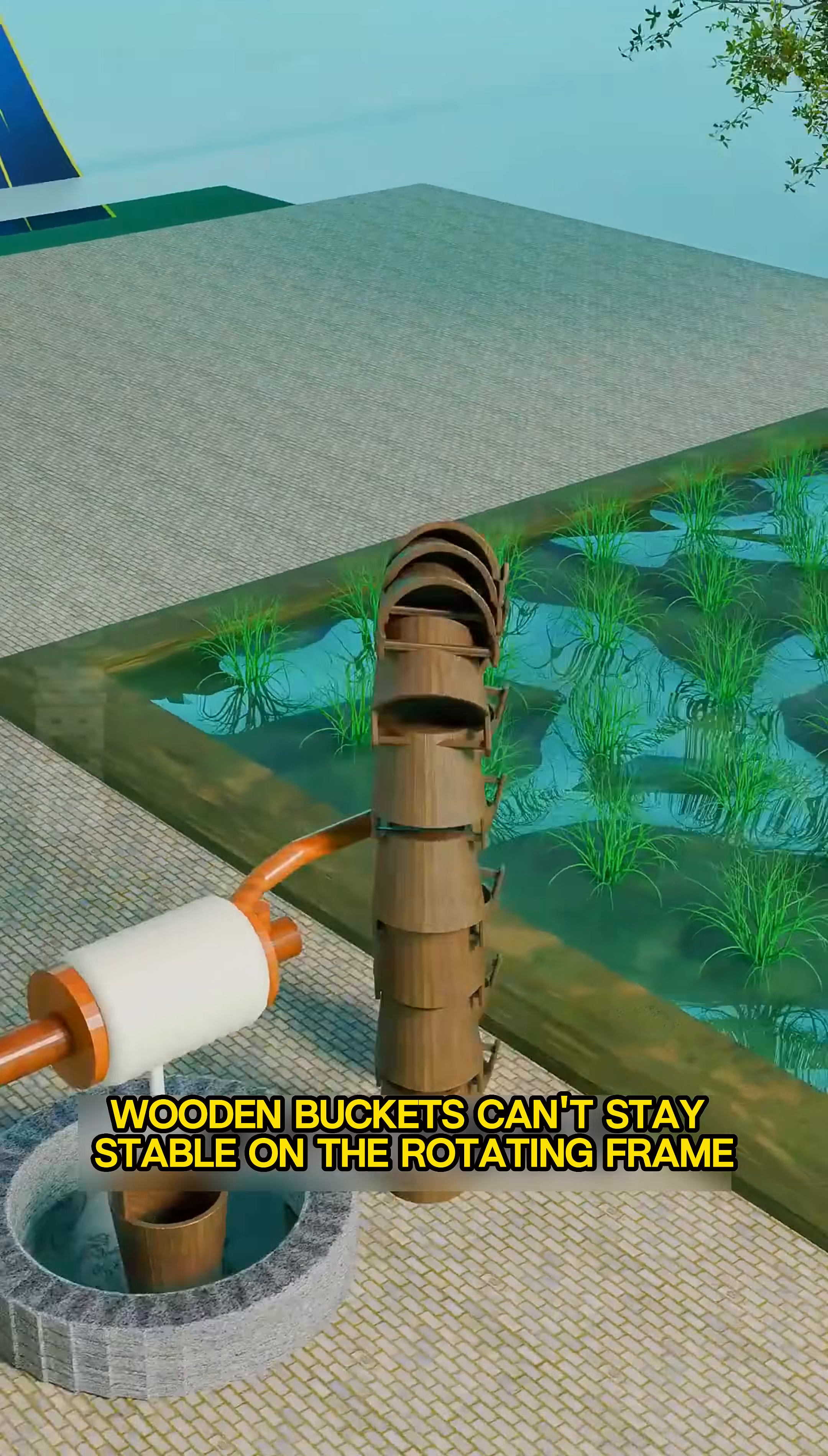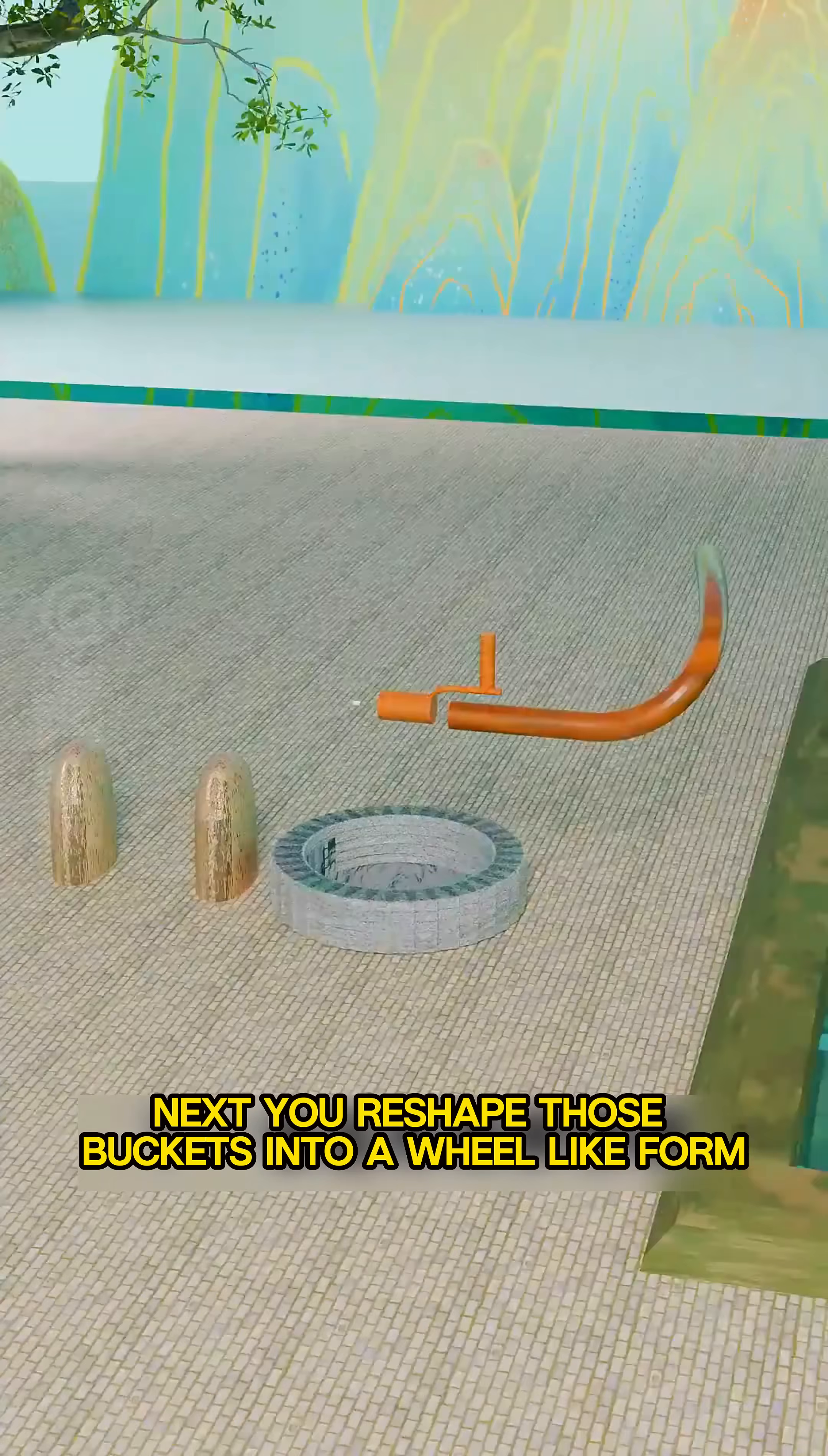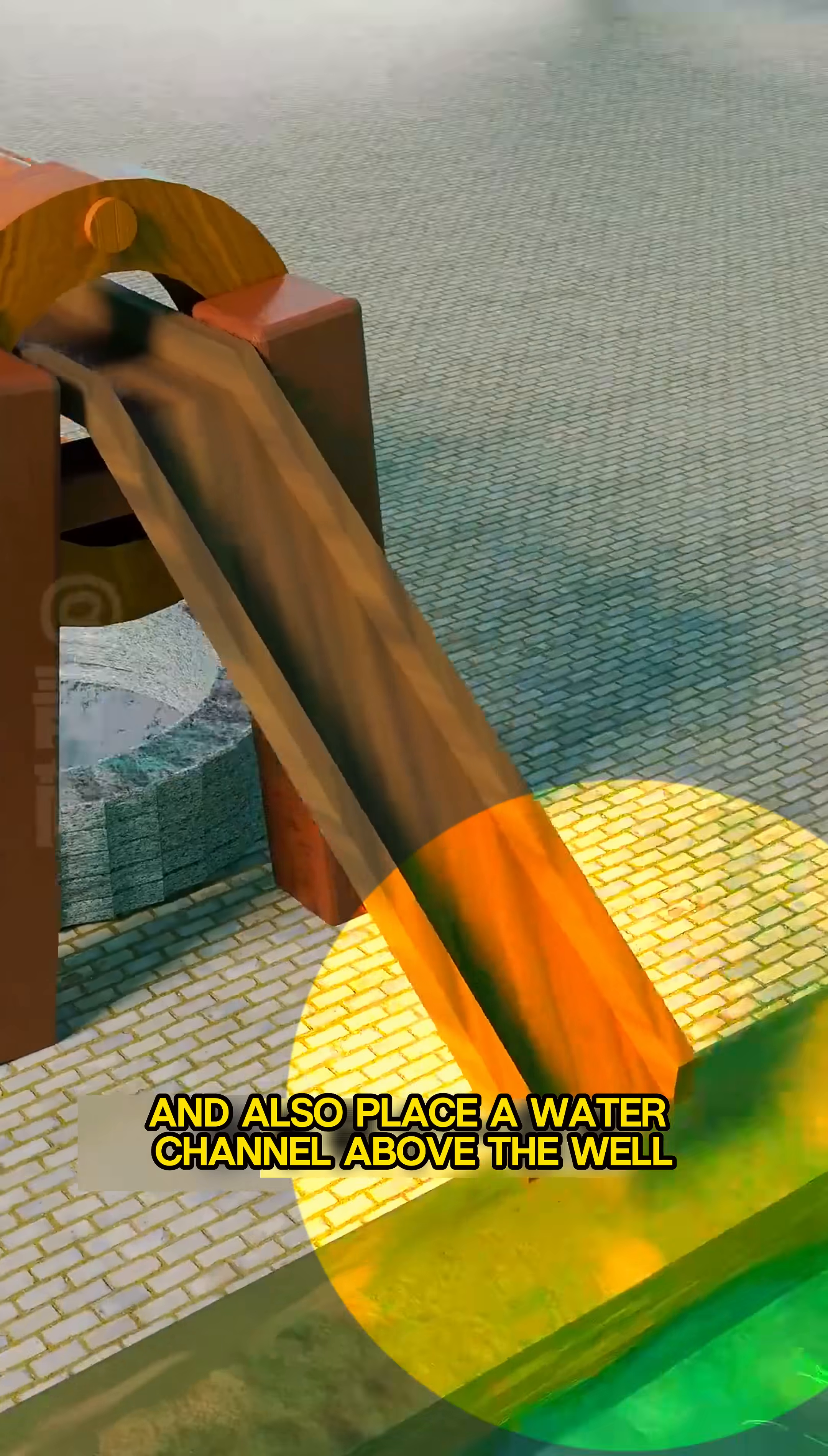But round wooden buckets can't stay stable on the rotating frame, so you replace them with flat-style buckets. Next, you reshape those buckets into a wheel-like form with grooves and also place a water channel above the well.